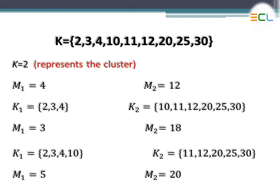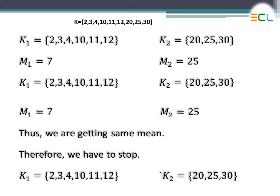You can see that the previous cluster and the second cluster are different, so the procedure continues until we get the same cluster in two or three iterations. In the last step, when you obtain m1 equal to 5 and m2 equal to 20, you get clusters: k1 contains 2, 3, 4, 10, 11, 12, and k2 contains 20, 25, and 30. Taking the averages again gives m1 equal to 7 and m2 equal to 25.